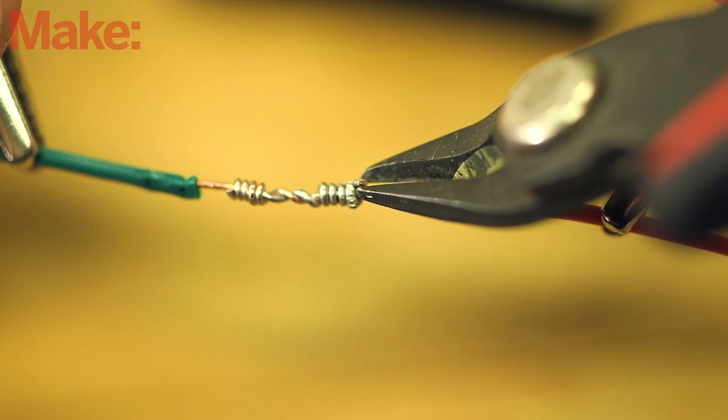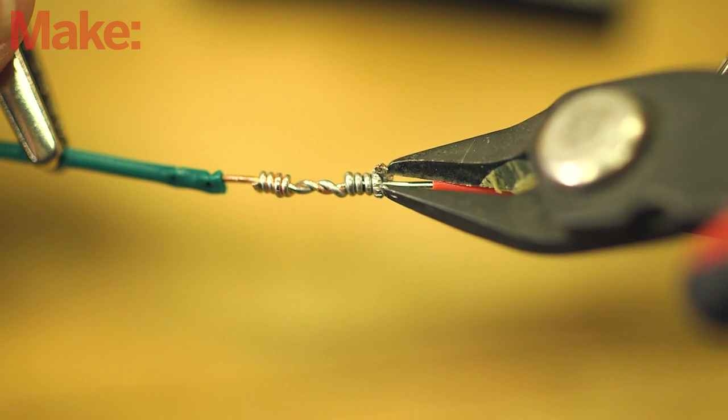Coil the other lead in the exact same manner. Trim off any excess ends so that the splice has no sharp protrusions.